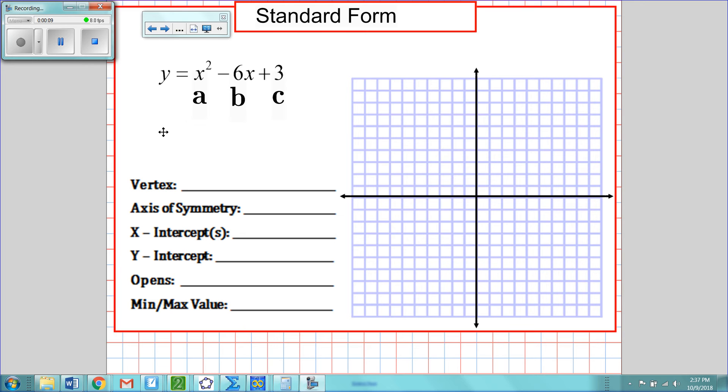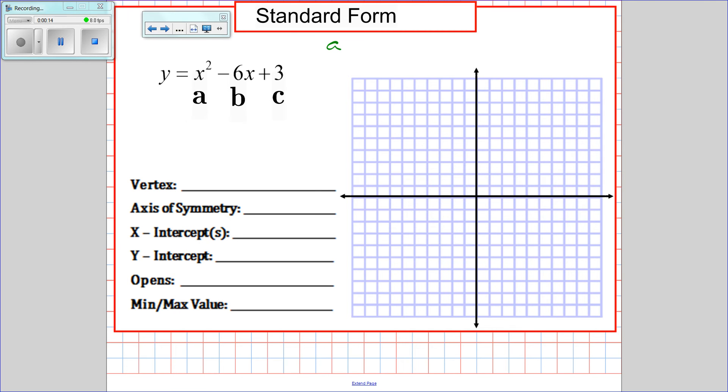So the first thing I'm going to do is identify a, b, and c, kind of like we did for the quadratic formula. a equals 1, b equals negative 6, and c equals 3.